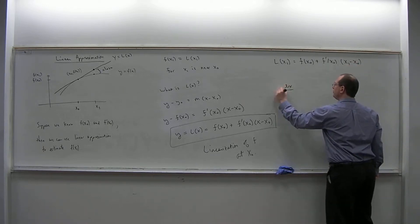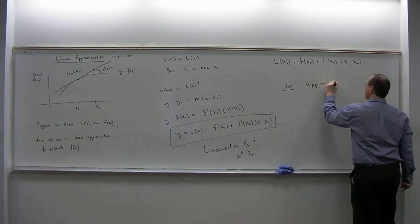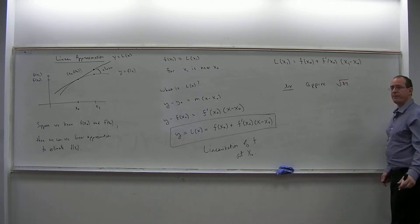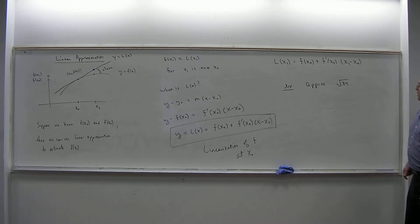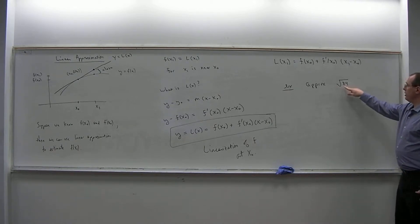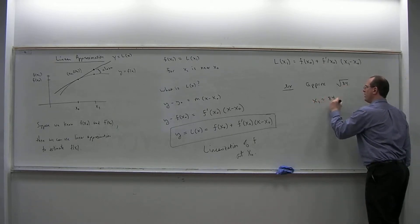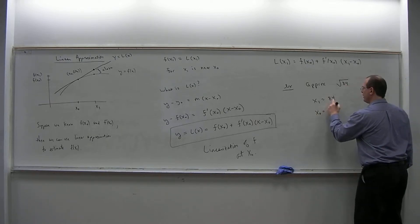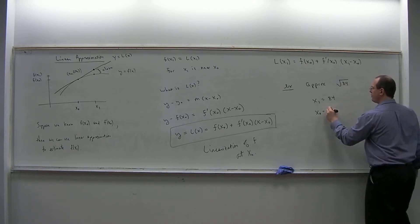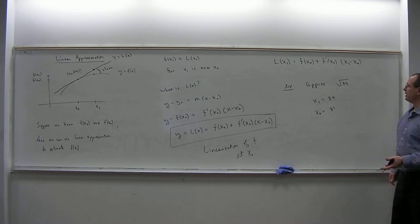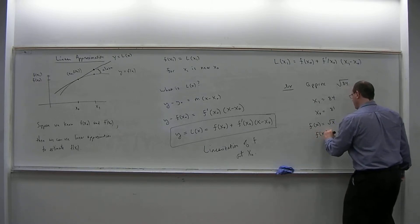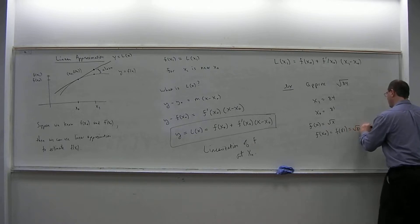Now let's try an example. Let's use linear approximation to approximate a square root — specifically the square root of 84. Since 84 is not a nice number to plug into the square root function, x1 is going to be 84. I need a number near 84 that I can plug in easily — that will be x0. Clearly a number near 84 that works well is 81, because the square root of 81 is 9. So we let f of x be the square root function. Then f of x0 equals f of 81, the square root of 81, which is 9.